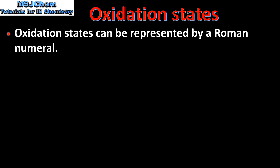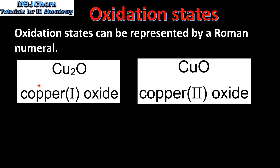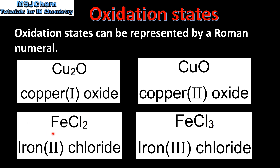Oxidation states can be represented by a Roman numeral. For example, copper can have two oxidation states: plus 1 in Cu₂O and plus 2 in CuO — named copper(I) oxide and copper(II) oxide. The Roman numeral tells you the oxidation state of the copper. Our last example is iron(II) chloride and iron(III) chloride: in iron(II) chloride the iron has an oxidation state of plus 2, and in iron(III) chloride the iron has an oxidation state of plus 3.